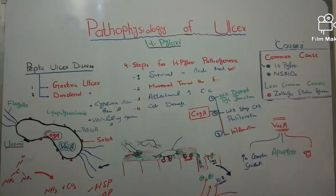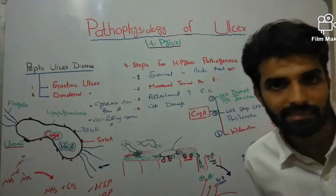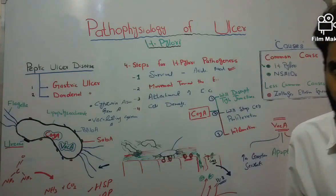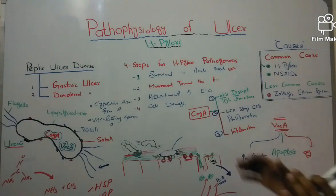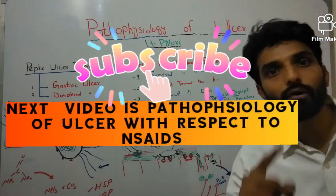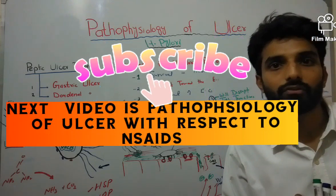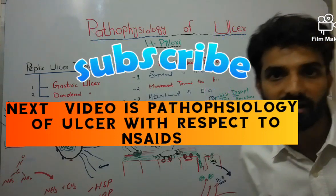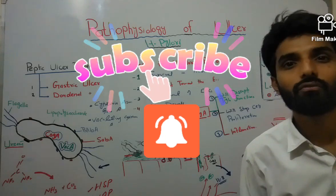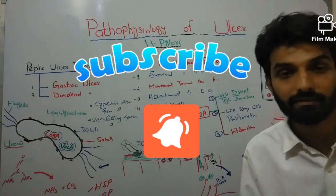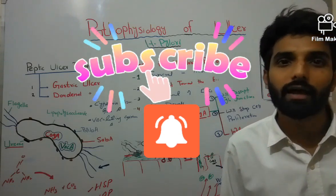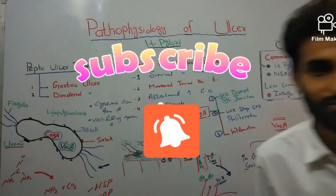This is the role of CagA and VacA proteins by which H. pylori causes ulcers in the stomach and duodenum. That was the pathophysiology of ulcer with respect to H. pylori. In the next video we will talk about the pathophysiology of ulcer with respect to NSAIDs. Please like, share, subscribe, and press the bell icon. Thank you.